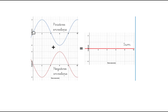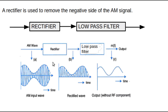The message signal from the positive side and the negative side are out of phase, so they will get added to result in zero — we will not get any message signal. To avoid this, the negative side of the AM signal should be removed. For that, we use a rectifier circuit. A rectifier can remove the negative side of the signal, so if we give this AM signal to the input of the rectifier, it will remove the negative half and we get the half-wave signal at the output.